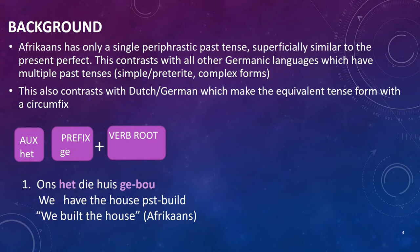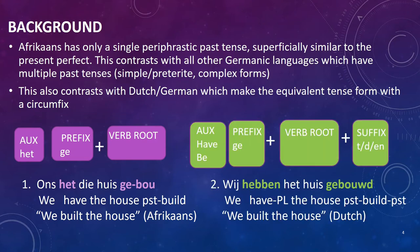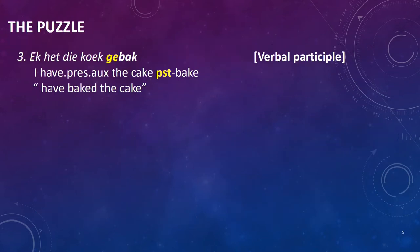So, Afrikaans only has the auxiliary 'have'. The participle itself is made up of a prefix 'ge', the verb root, and a suffix. The suffix can be 't' or 'd', which is usually phonologically conditioned, and there are some verb forms which take suppletive forms of the suffix, such as 'en'. With those building blocks in place, we are able to look at the puzzle I will be focusing on today. Example three shows a typical example of the past tense — a verbal participle used in its clausal function. The word 'gebak' consists of the verb root and the prefix, which is exactly what you would have been led to expect.